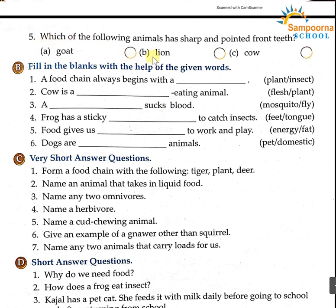What do you want to write? It's a lion. Which of the following animals has sharp and pointed front teeth? Lion. Now, exercise B: fill in the blanks with the help of the given words.